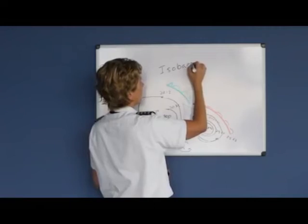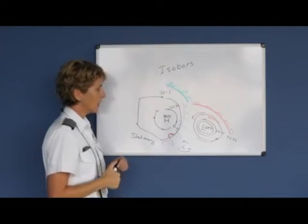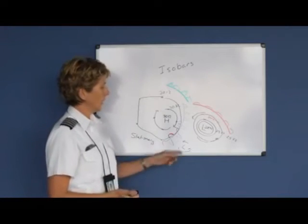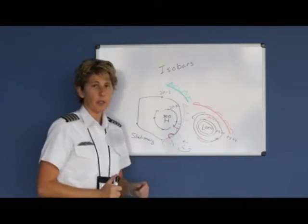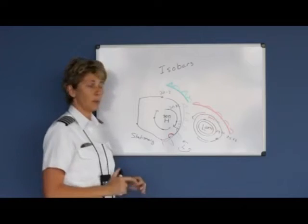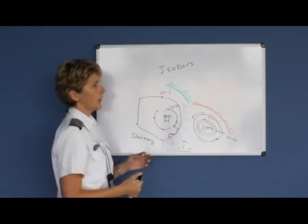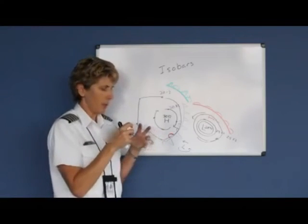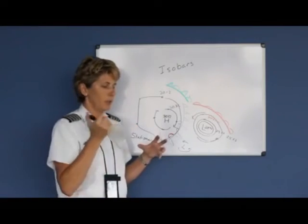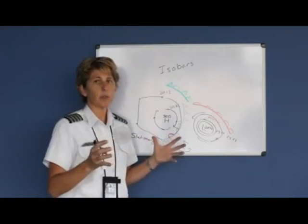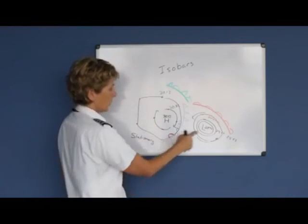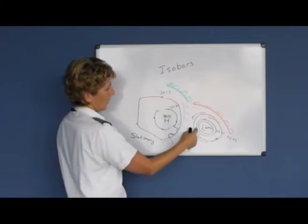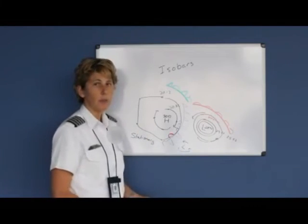Isobars are pressure gradient lines. To us, they let us know how quickly the pressure is rising or falling. If you see isobars very close together, the pressure is changing rapidly, so it would be very windy. You can think of a balloon blown up with a lot of air pressure inside — if you pop the balloon, the air disperses rapidly and you'd feel a breeze. So when isobars are close together, you would expect it to be very windy.